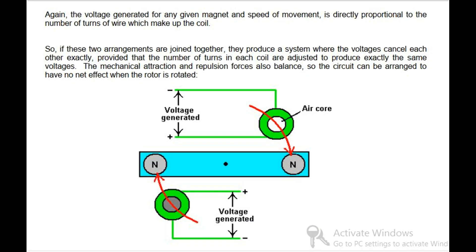So, if these two arrangements are joined together, they produce a system where the voltages cancel each other exactly, provided that the number of turns in each coil are adjusted to produce exactly the same voltages.